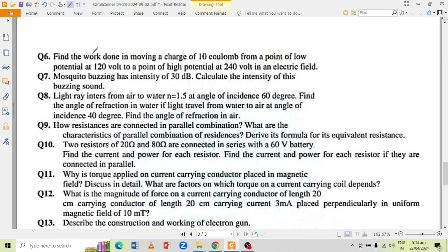Find the work done in moving a charge of 10 coulombs from a point of low potential at 120 volt to a point of high potential at 240 volt in electric field. Mosquito buzzing has intensity of 30 decibels. Calculate the intensity of this buzzing sound. Light ray enters from air to water at angle of incidence 60 degrees. Find the angle of refraction in water. If the light travel from water to air at the angle of incidence 40 degrees, find the angle of refraction in air as well.